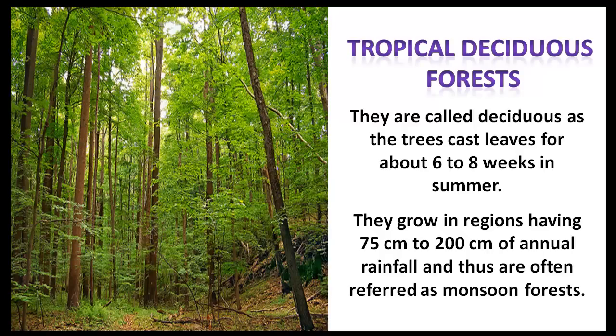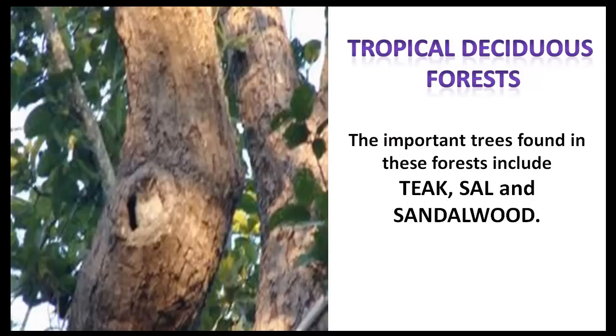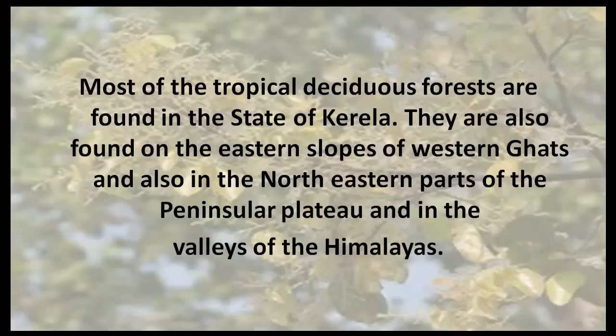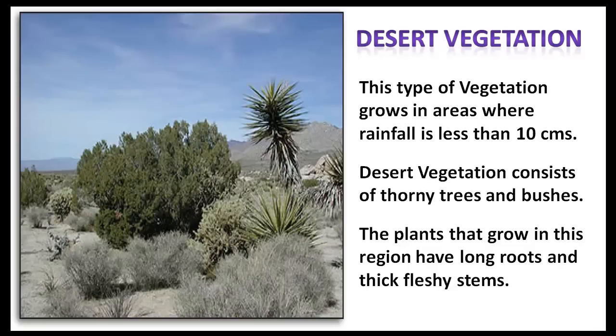The tropical deciduous forests are called deciduous as the trees cast leaves for about 6 to 8 weeks in summer. They grow in regions having 75 to 200 cm of annual rainfall and thus are often referred to as monsoon forests. The important trees found in these forests include teak, sal and sandalwood. Most of the tropical deciduous forests are found in the state of Kerala. They are also found on the eastern slopes of Western Ghats and in the northeastern parts of the peninsula plateau and in the valleys of the Himalayas.